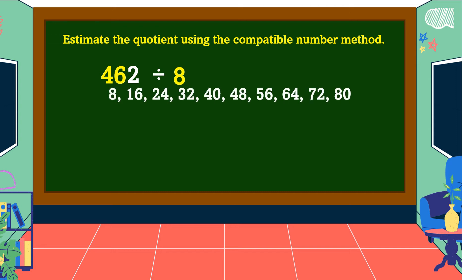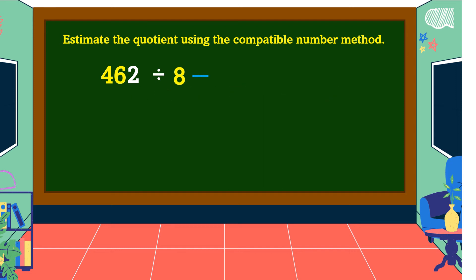The multiples of 8 are 8, 16, 24, 32, 40, 48, 56, 64, 72, 80, and so on. 46 is nearest to 48, so we use 48 as a compatible number to 8. Then make the remaining digit, which is 2, into 0. Our number is now 480. 48 divided by 8 equals 6. Copy the 0 from our dividend into our quotient. Therefore, the estimated quotient of 462 divided by 8 using the compatible number method is 60.